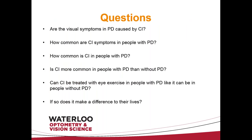This brings us to our research questions: Are the visual symptoms in Parkinson's disease caused by convergence insufficiency? We don't know. How common are convergence insufficiency type symptoms in people with Parkinson's disease? We don't know. How common is convergence insufficiency in people with Parkinson's disease? We don't know. Is convergence insufficiency more common in people with Parkinson's disease than without? We don't know. Can convergence insufficiency be treated with eye exercises in people with Parkinson's disease like it can be in people without Parkinson's disease?